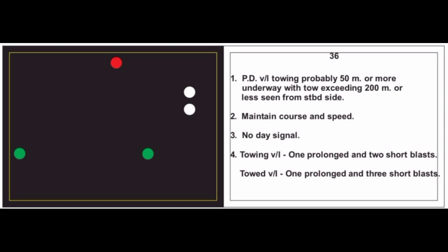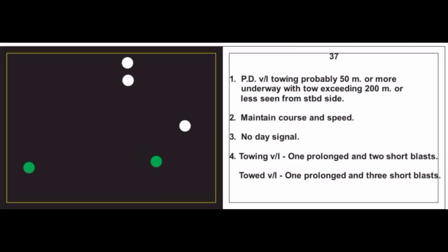Card 36: Power driven vessel towing, probably 50 meters or more, underway with tow 200 meters or less, seen from starboard side. Maintain course and speed. No day signal. Towing vessel: one prolonged and two short blasts; towed vessel: one prolonged and three short blasts. Note: the red light visible on the upper end is actually white — it is an error in the card indicating the vessel is more than 50 meters. Card 37: Same lights, same scenario — power driven vessel towing probably 50 meters or more, tow 200 meters or less, from starboard side. Maintain course and speed. No day signal. Towing: one prolonged and two short; towed: one prolonged and three short blasts.